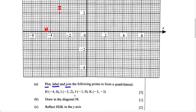For our third point, we have point J, and it has the coordinates negative 1, 0. So negative 1 on the X, 0 on the Y. We know negative 1, even though they didn't label it, is going to fall between 0 and negative 2 — so right here. And the Y coordinate is going to be 0, therefore we can plot this point right here. This is going to be point J.